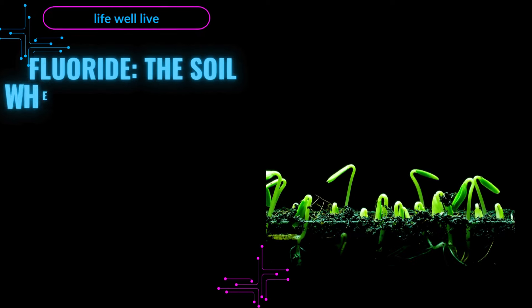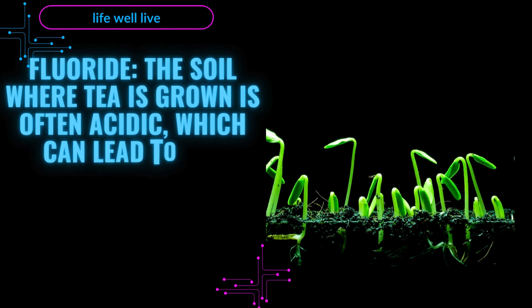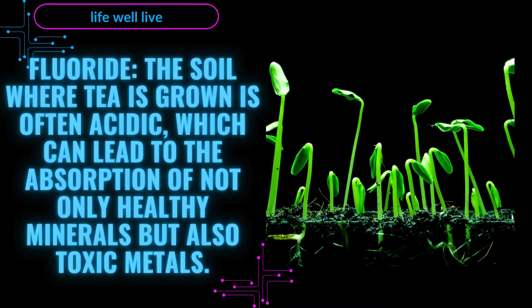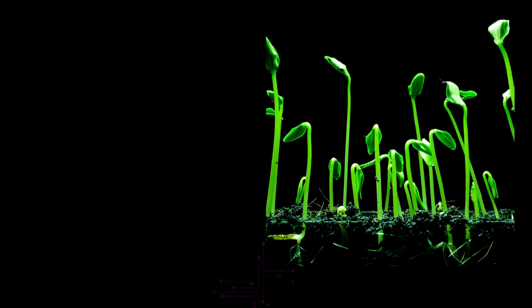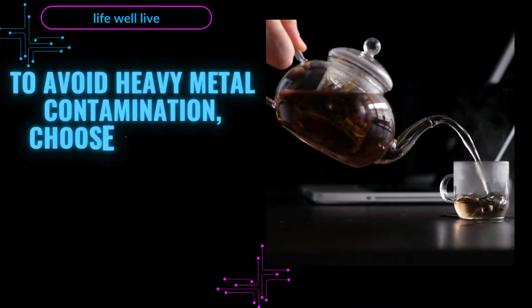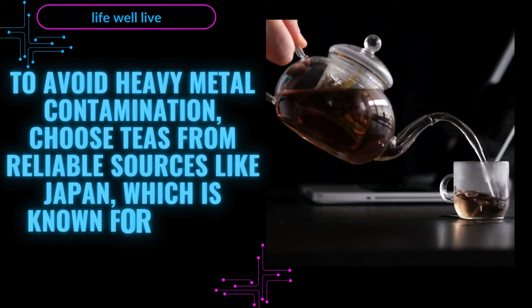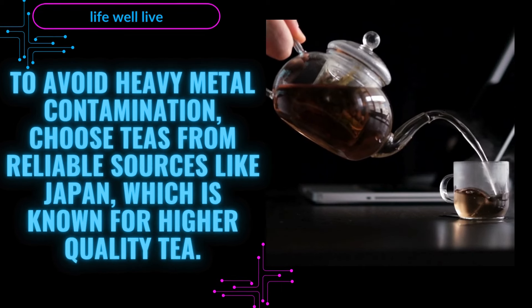Fluoride. The soil where tea is grown is often acidic, which can lead to the absorption of not only healthy minerals but also toxic metals. To avoid heavy metal contamination, choose teas from reliable sources like Japan, which is known for higher quality tea.